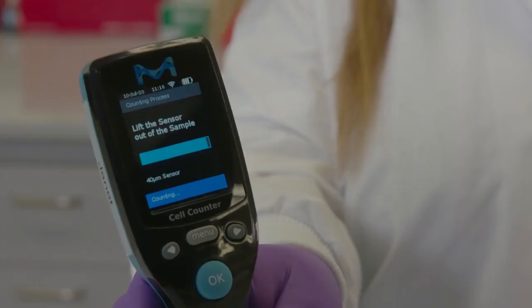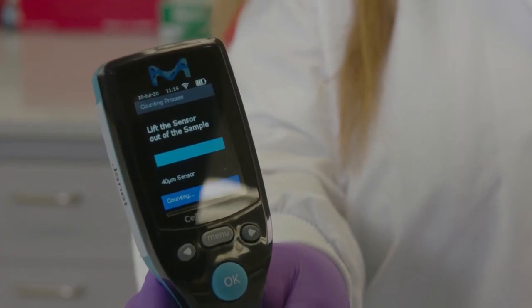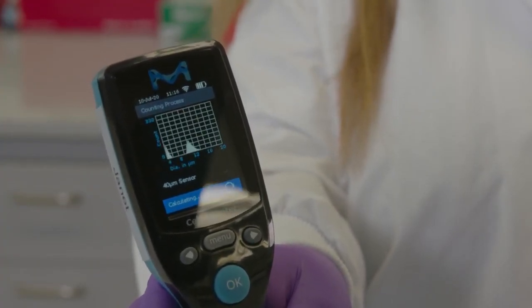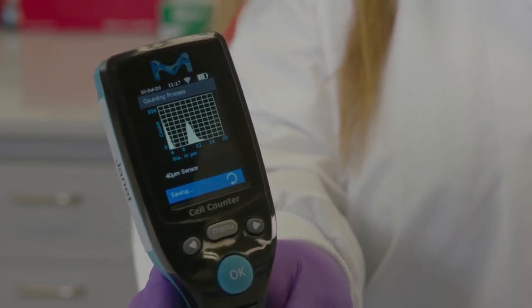Once the beep is heard, the sample has been drawn and you can remove the sensor tip from the solution. Pause while the sample volume travels through the microfluidic channels, to the sensing zone and finally to the stop chamber.